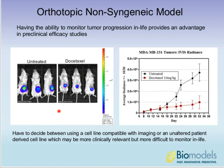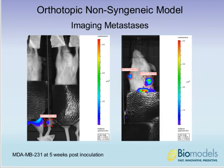There's a decision to make between using a cell line that can be monitored in life via imaging versus an unaltered patient-derived cell line that may be more clinically relevant but more difficult to monitor. Imaging metastases is also important — the primary tumor can be shielded in the IVIS imaging system to detect sites of metastases. In this same study with 231 cells, we can see metastases in lymph nodes and bone at five weeks post-inoculation.